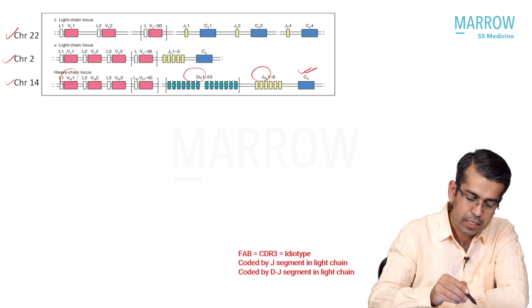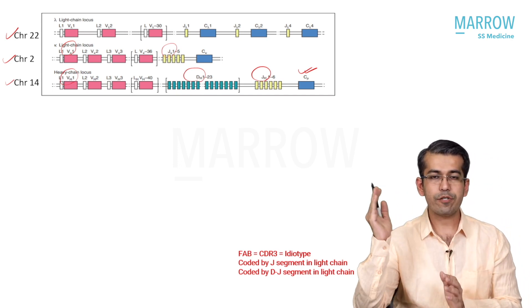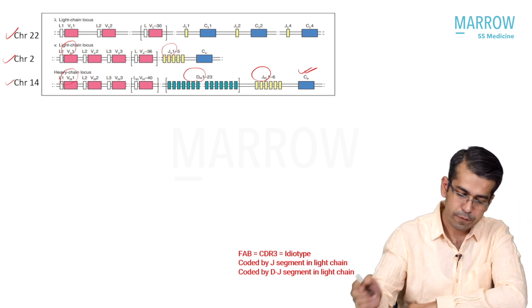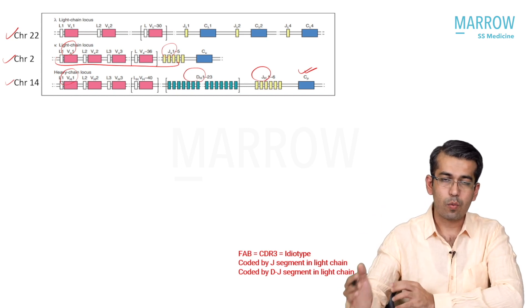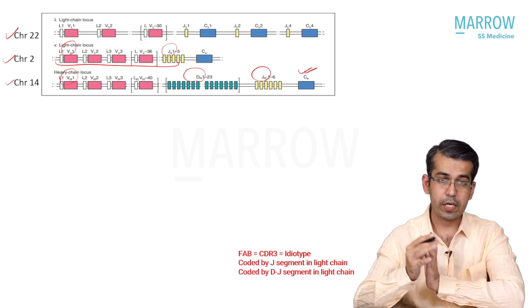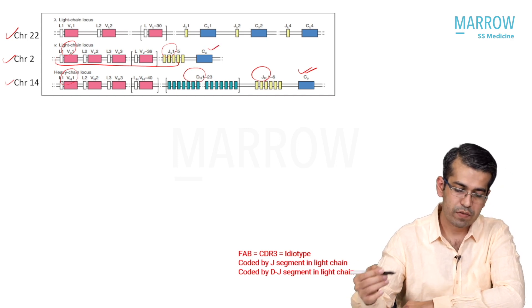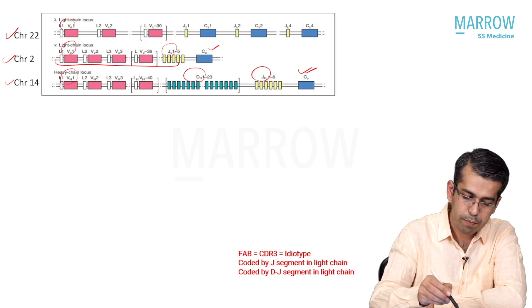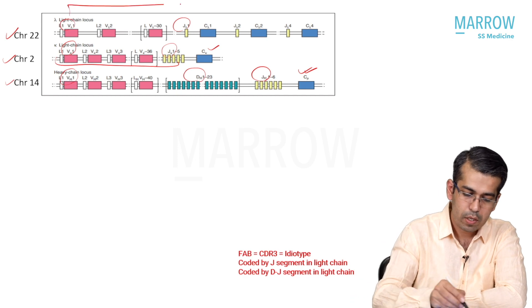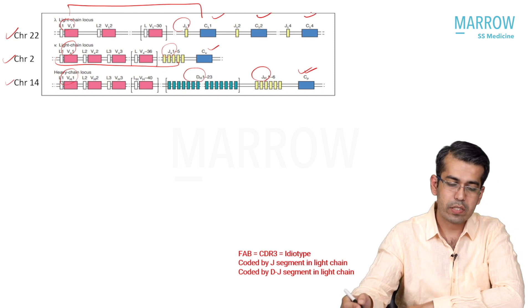In the light chains, kappa has a V portion and a J portion but no D portion - so it is V and J in the light chains versus V, D, J in the heavy chains. The V and J together make the variable portion of the kappa light chain, followed by the constant portion. Lambda has the same organization: a V and J portion making the variable region, followed by C.